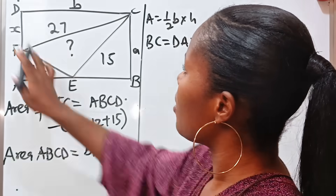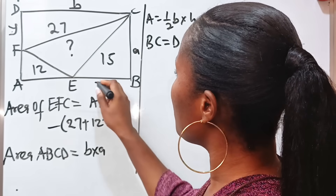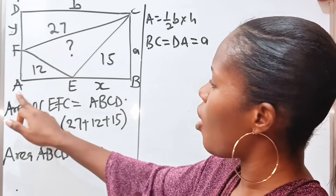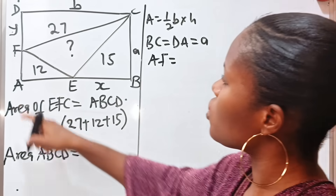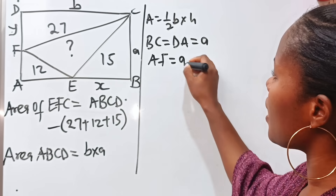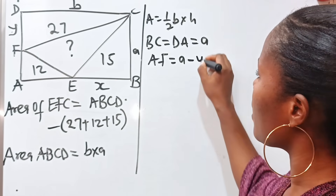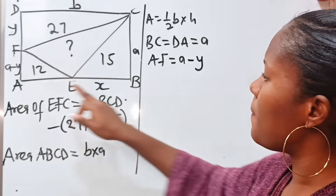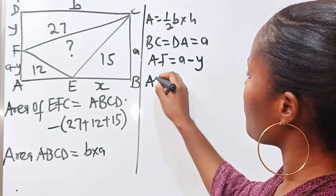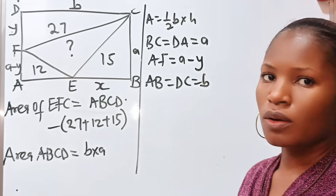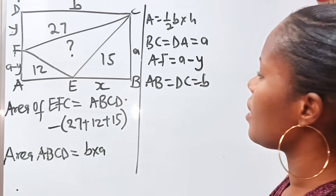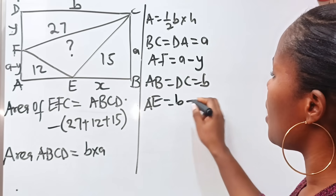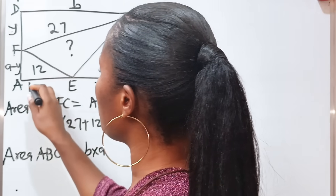If we call EB as X and DF as Y, then AF equals DA minus DF, which is a minus Y. Similarly, AB equals DC equals small b, and EB is X. So the segment from E to F along the top is AB minus EB, which is b minus X.